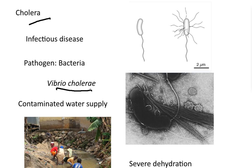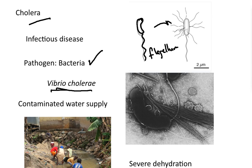The disease is caused by a bacteria. The genus Vibrio tells you that the bacteria is a kind of comma shape. It actually has a long, what's called a flagellum sticking out the back here that allows it to move. And sometimes it also has these hair-like projections which are called pili.